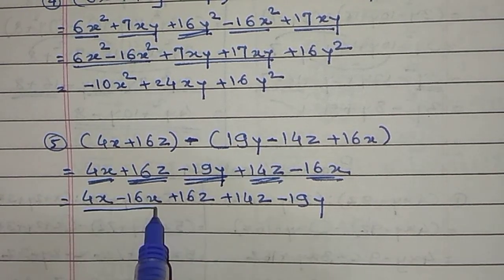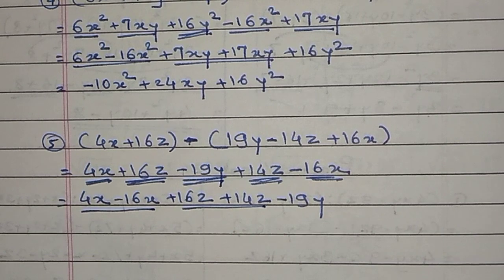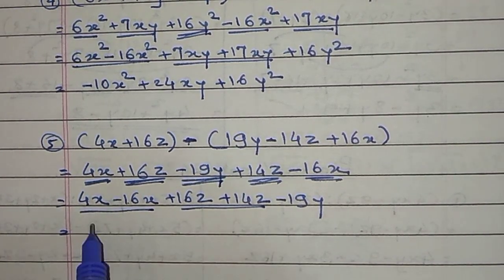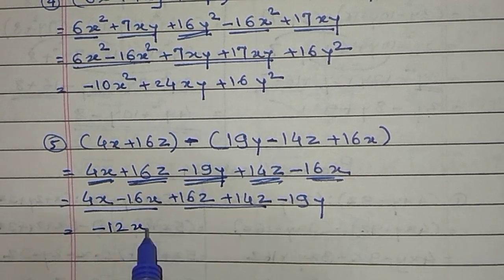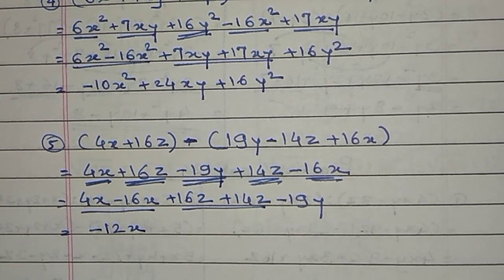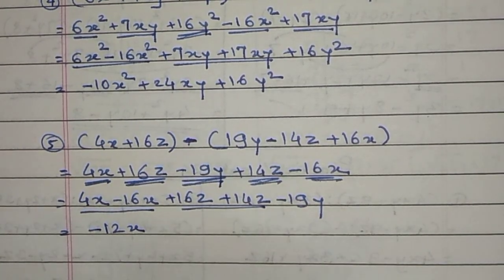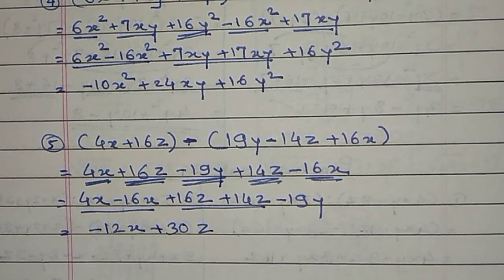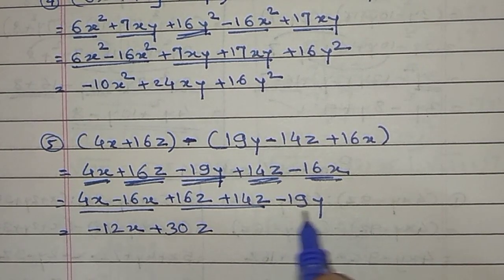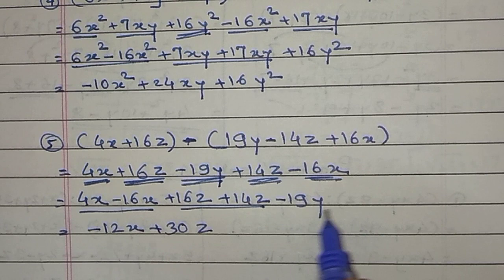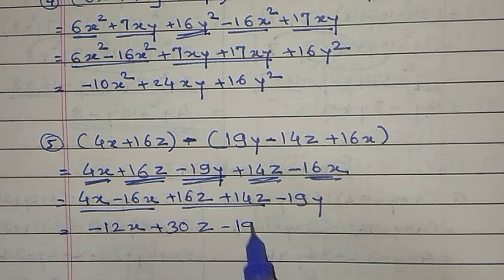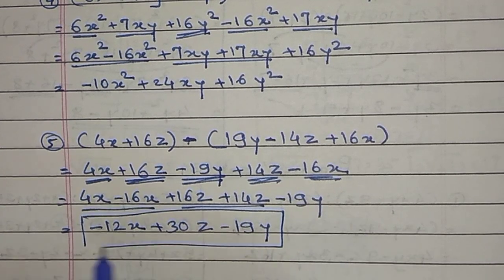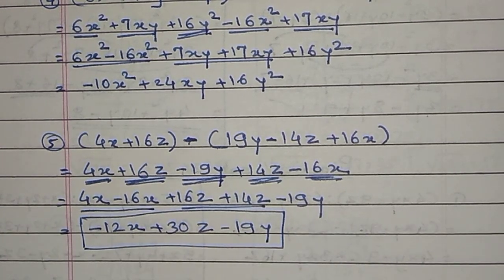Now write the answers of the like terms. 4 minus 16 gives minus 12x. Plus 16 plus 14 gives plus 30, and the variable is z. And minus 19y does not have any pair, so it comes down as it is. This is our final answer: minus 12x plus 30z minus 19y.